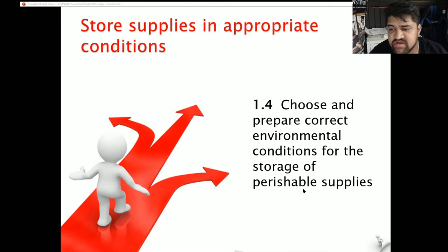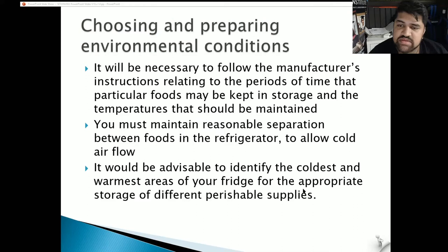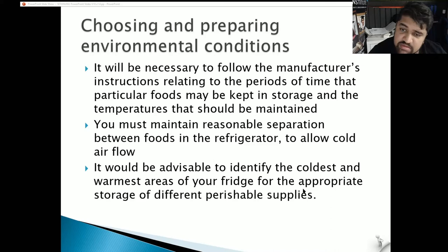1.4: Choose and prepare correct environmental conditions for storage of perishable supplies. Follow the manufacturer's instructions, which are usually on the product label — they'll tell you how to store it, where to store it, lighting conditions, temperatures, and humidity. Consider the periods of time that particular foods may be kept in storage and the temperatures that should be maintained. Maintain reasonable separation between cold foods in the refrigerator to allow cold air flow.